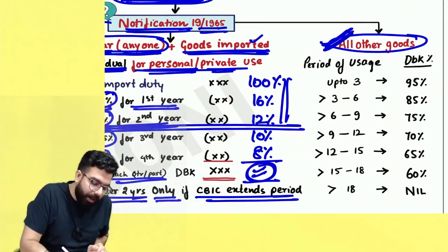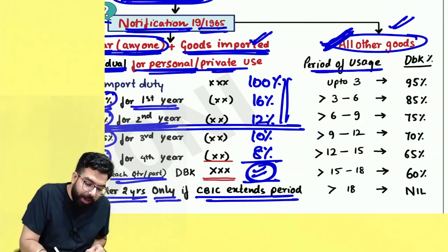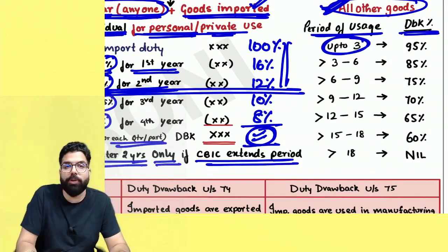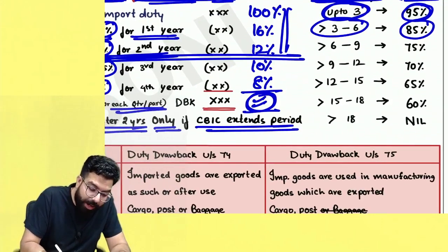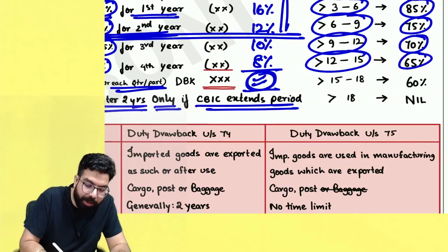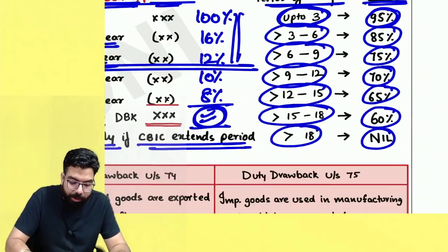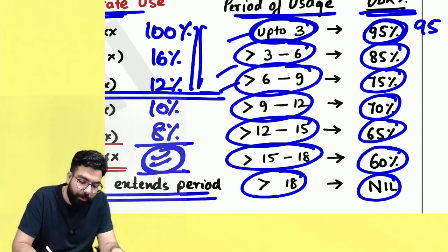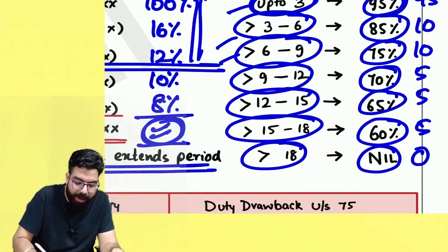Category three: all other goods — for example, a laptop imported for official use. Duty drawback is based on period of usage: up to 3 months: 95%; greater than 3 to 6 months: 85%; greater than 6 to 9 months: 75%; greater than 9 to 12 months: 70%; greater than 12 to 15 months: 65%; greater than 15 to 18 months: 60%; greater than 18 months: nil.